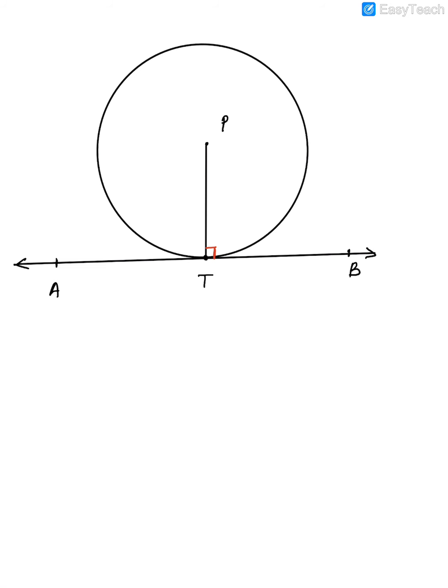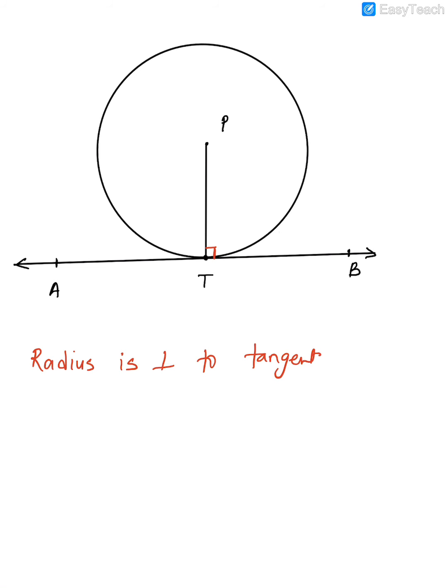You can draw a tangent anywhere on this circle and join that point to the center — that angle will be 90 degrees. In simple words, the radius is perpendicular to the tangent. The actual textbook statement is: the tangent at any point of a circle and the radius through that point are perpendicular to each other. This is property number one.